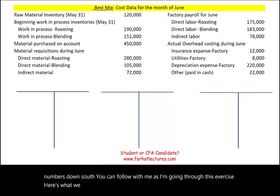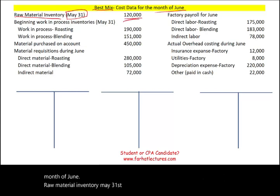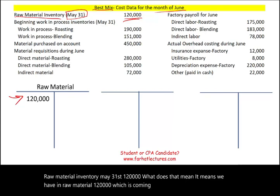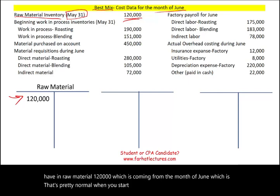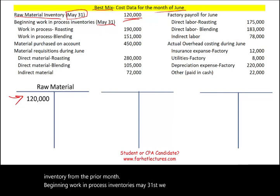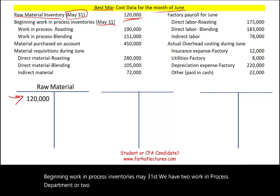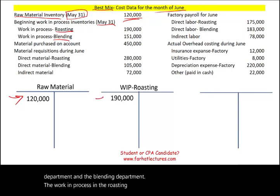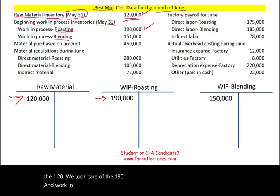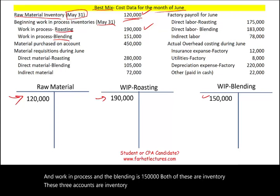This is the Best Mix Company, and we have cost data for the month of June. Raw material inventory on May 31st is $120,000 — that's the beginning balance carried over from the prior month. Beginning work in process inventories also as of May 31st: the roasting department has $190,000 and the blending department has $150,000. All three are inventory accounts representing beginning balances.